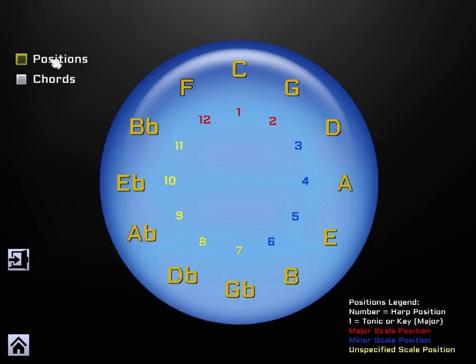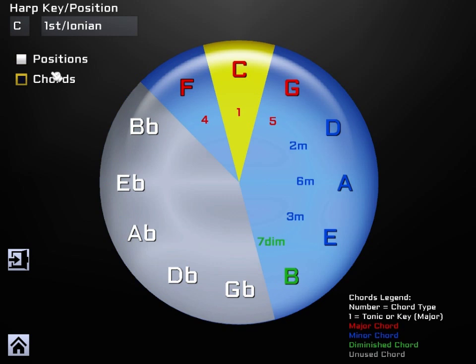We can switch between positions mode and chords mode, which I'll explain more in depth in a minute. On the bottom right here we have a legend, which changes depending on which one we have, positions legend and chords legend. The colors are explained here, what they mean. And on the bottom left we have the exit button and the main menu button.